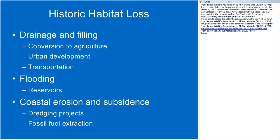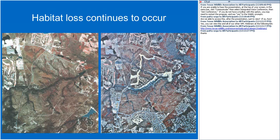Habitat loss continues to occur. In Texas, the population is supposed to continue expanding, which means we're going to see more loss. These images are from the same area — on the left, an area that was basically unpopulated, and over time it has been developed, with a pretty significant portion of the habitat lost.